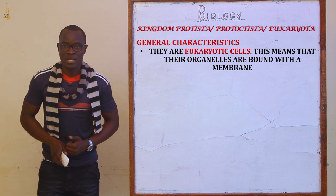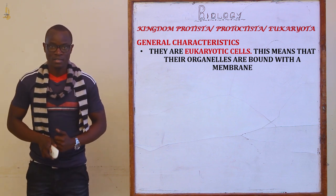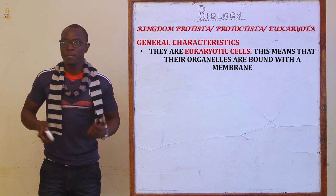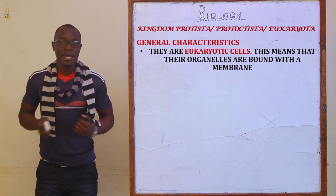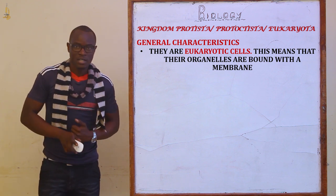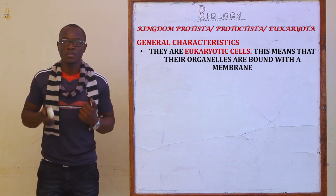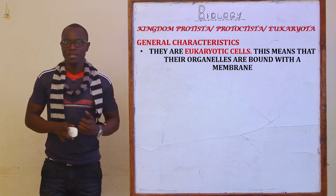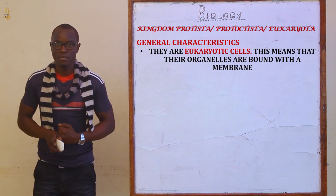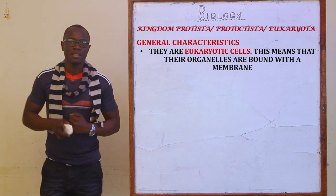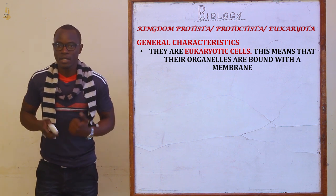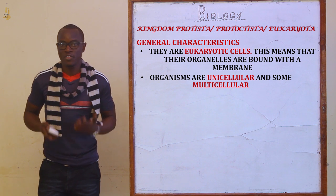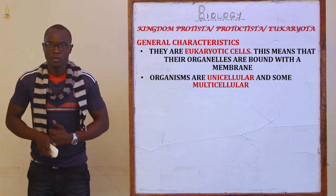The first characteristic is that they are eukaryotic cells. All their organelles are membrane-bound, hence the name eukaryota. They are also unicellular, and some of them are multicellular.